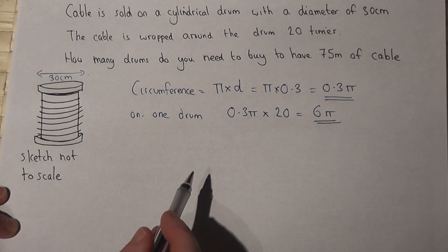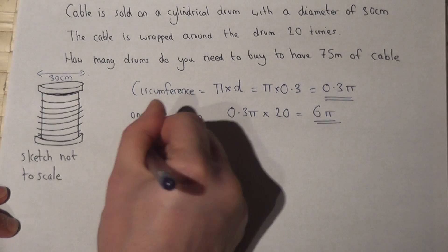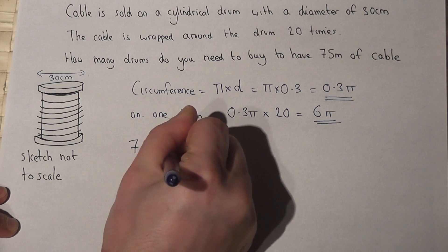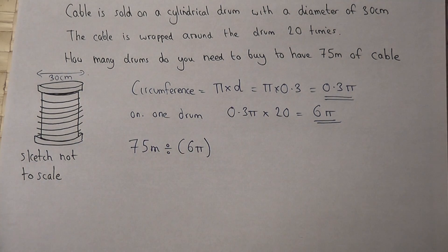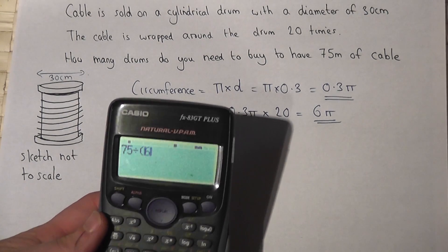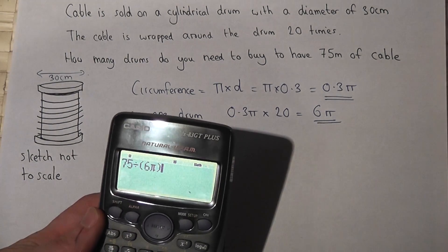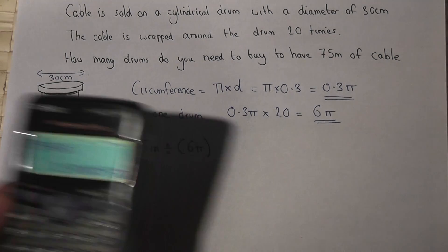So to find the amount required to do this amount of cabling, we must do 75 meters divided by 6 pi on the calculator. So 75 divided by 6 pi works out at 3.98.